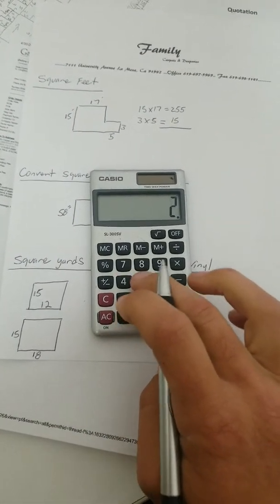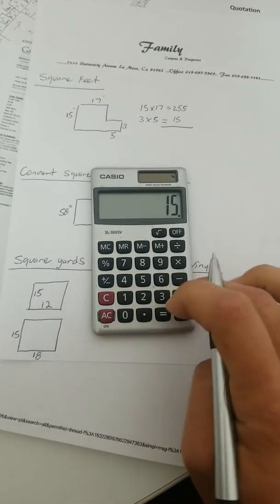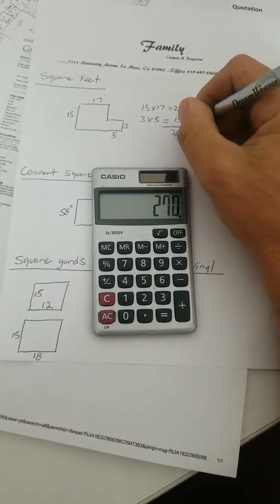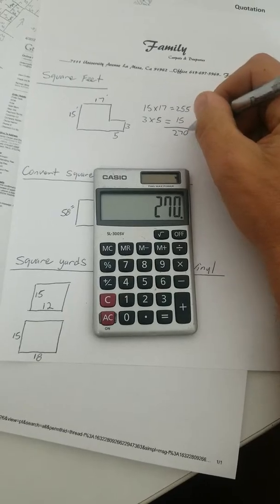We add those up, 255 plus 15, that gives you your exact square footage.